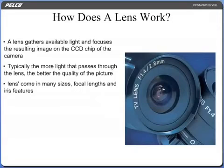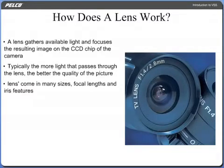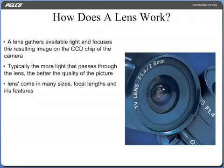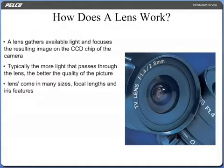A lens gathers available light and focuses the resulting image on the CCD chip of the camera. Typically, the more light that passes through the lens, the better the quality of the picture. Lenses come in many sizes, focal lengths, and iris features.